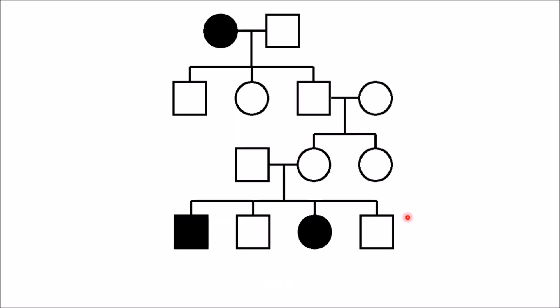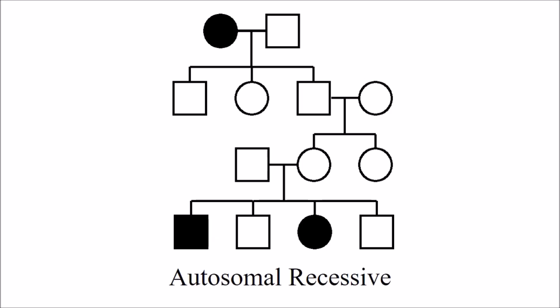In this pedigree chart, skipping of generation is seen, so it is a recessive disorder. There is no male-to-male transmission, so it could be autosomal recessive or X-linked recessive. But both females and males are equally affected, therefore it is an autosomal recessive disorder.